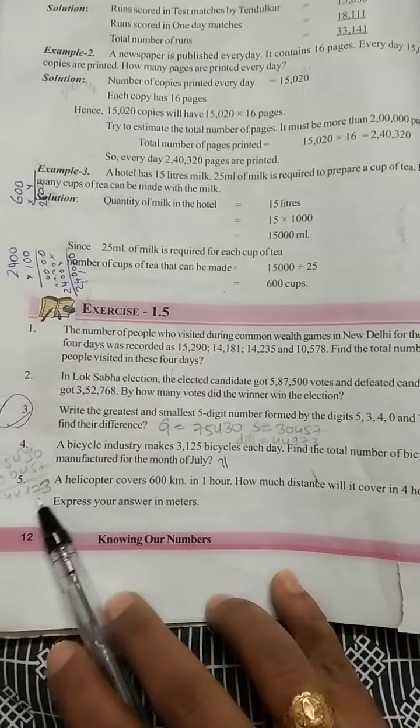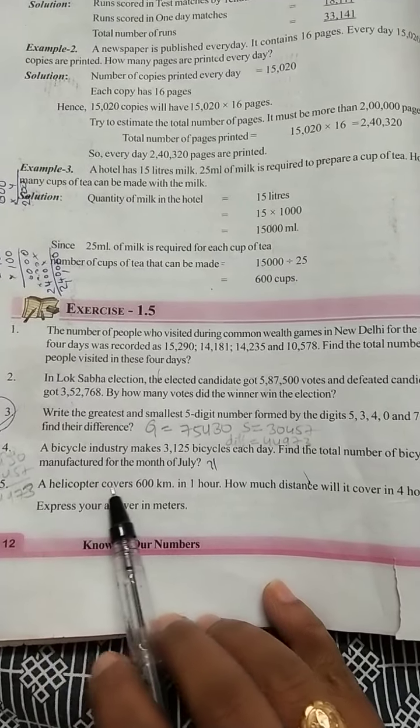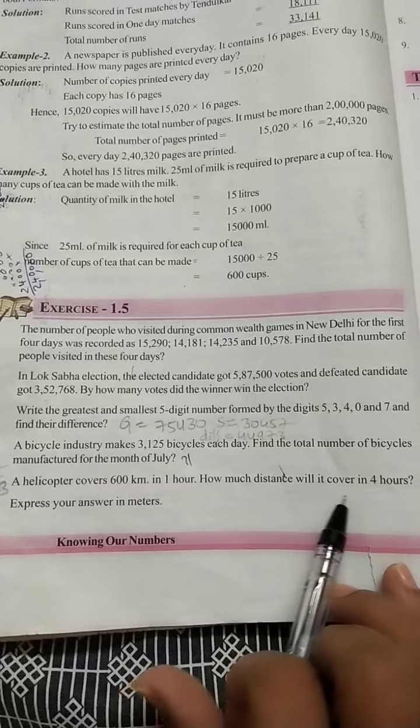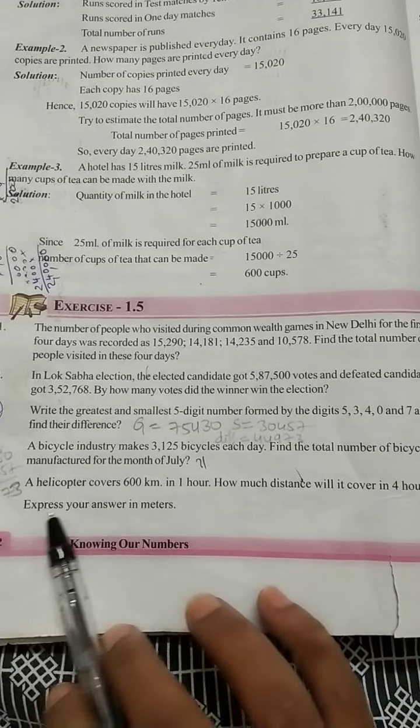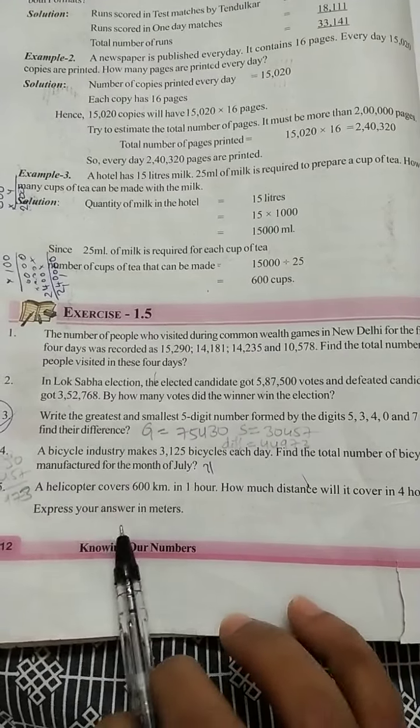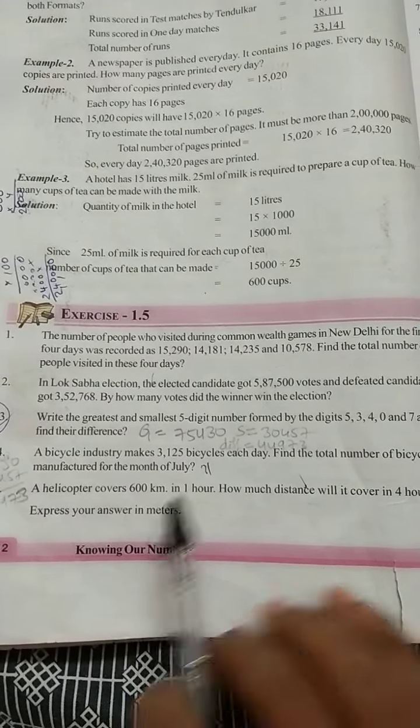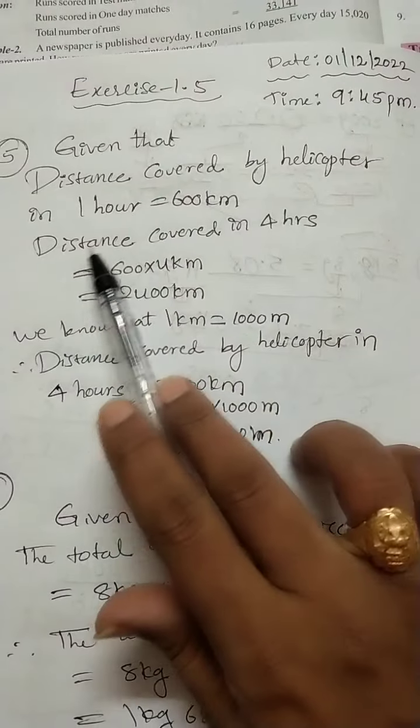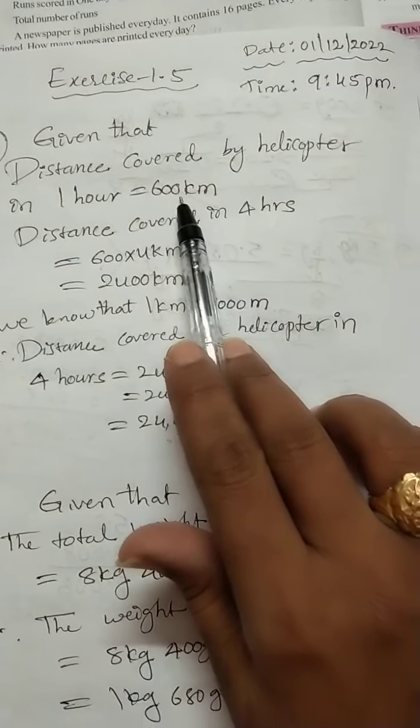See here, question 5. A helicopter covers 600 km in 1 hour. How much distance will it cover in 4 hours? Express your answer in meters. Distance covered by helicopter in 1 hour is 600 km given.